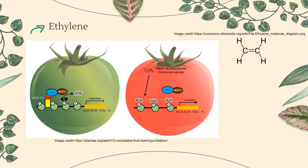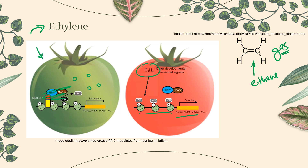Our last hormone of the day is ethylene — a very small, non-polar molecule with two carbons and four hydrogens that exists as a gas at room temperature. Without ethylene, fruit is unripened: green, not soft, not sweet. As soon as the seeds inside the fruit are mature and ready to be dispersed, ethylene is produced. Ethylene removes repressors from promoters, allowing transcription and translation of proteins that cause the fruit to turn an enticing color, get sweet, get soft, and potentially fall off the plant — so animals can eat the fruit and disperse the seeds elsewhere.